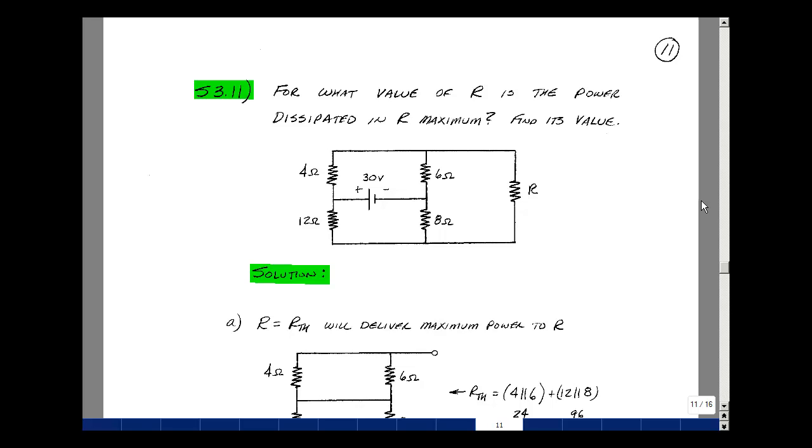This lesson deals with supplemental problem 3.11. You can find this problem in the ECE 201 ebook in the Chapter 3 Supplemental Problems on page 11. Given this circuit, what value of the resistor R is needed to get the maximum power in R?